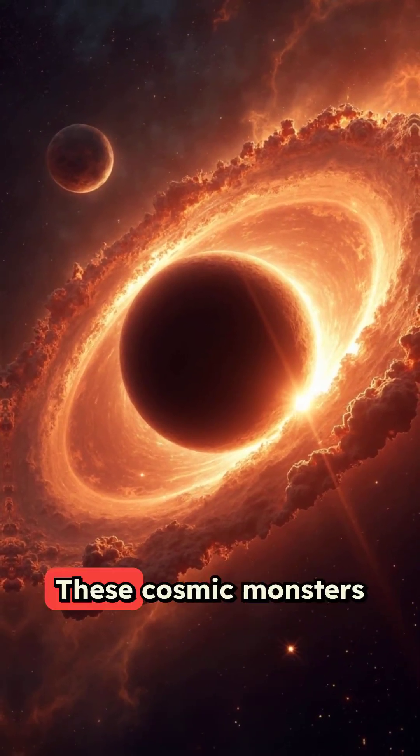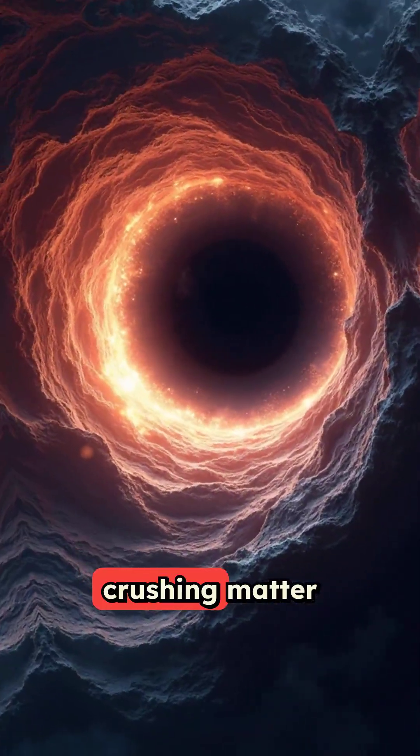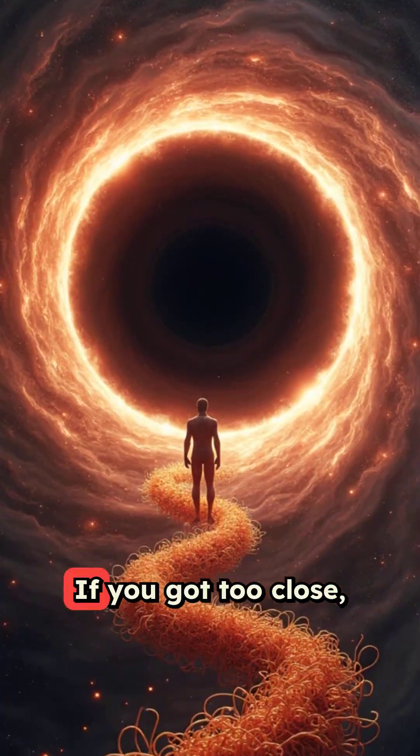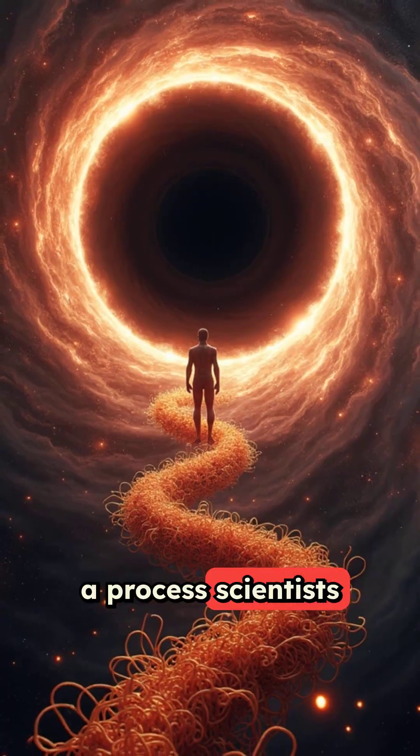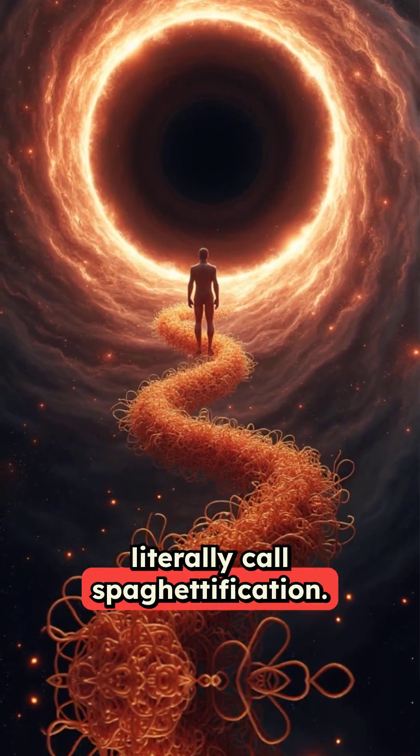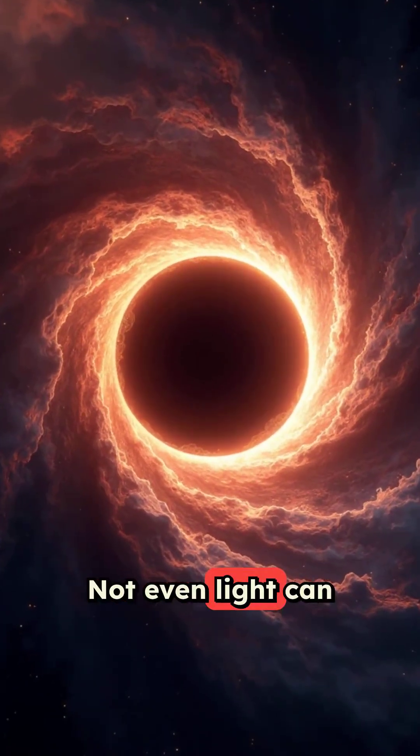Let's start with black holes. These cosmic monsters form when giant stars collapse, crushing matter into a point smaller than an atom. If you got too close, you'd be pulled in and stretched like spaghetti in a process scientists literally call spaghettification. And once you pass the event horizon, not even light can escape.